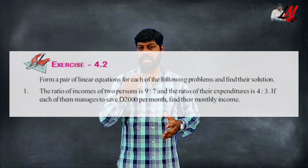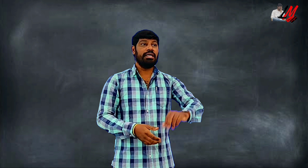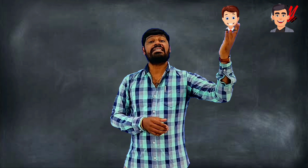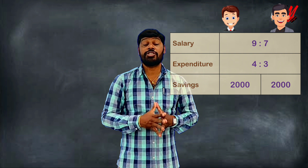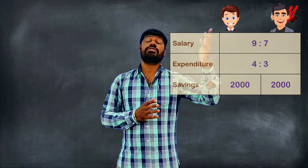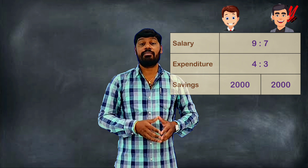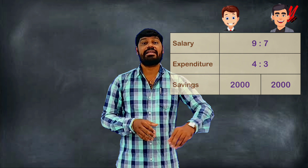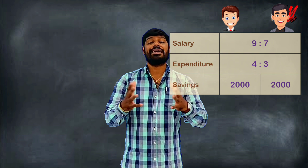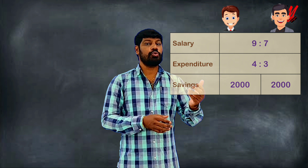Let's look at the first problem on screen. I will explain how we set up variables for persons A and B. These are two different people with different jobs and different salaries. The ratio of their salaries is 9 is to 7, and every month their expenditure ratio is 4 is to 3. Each person saves 2,000 rupees.